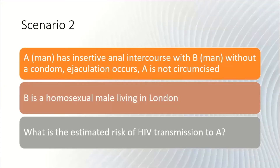Scenario 2. A is a man who has had insertive anal intercourse with B, a man, without a condom. Ejaculation occurs and A is not circumcised. B is a homosexual male living in London. The HIV status of B is unknown and it is unknown whether he is circumcised or not. Calculate the estimated risk of HIV transmission from B to A. Pause the video now to perform your calculation and we'll go over the answer in the next slide.